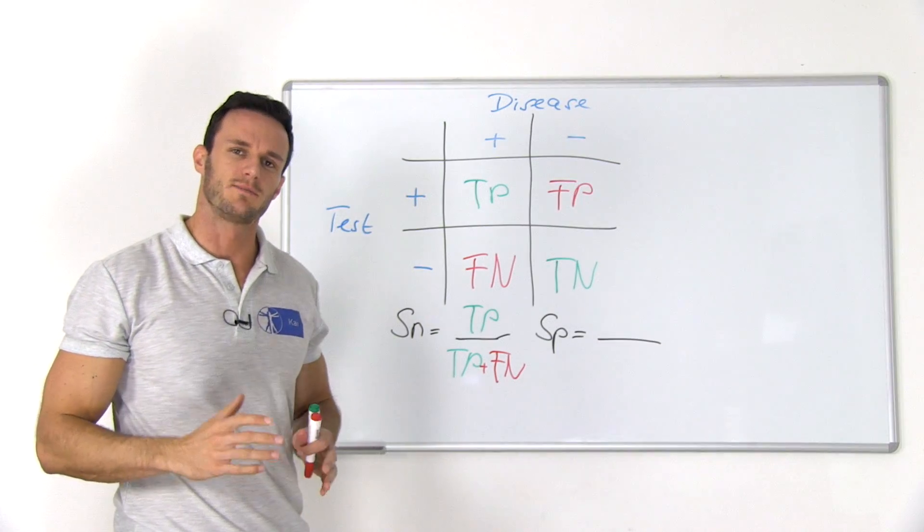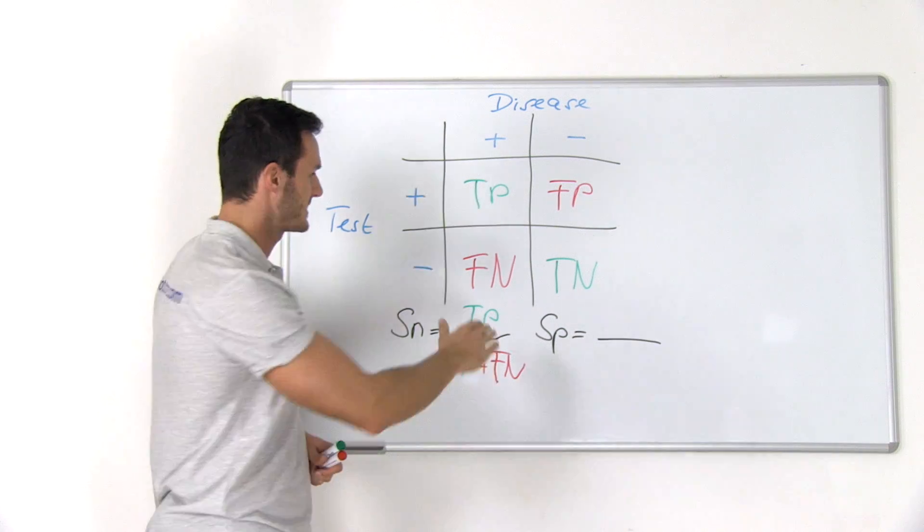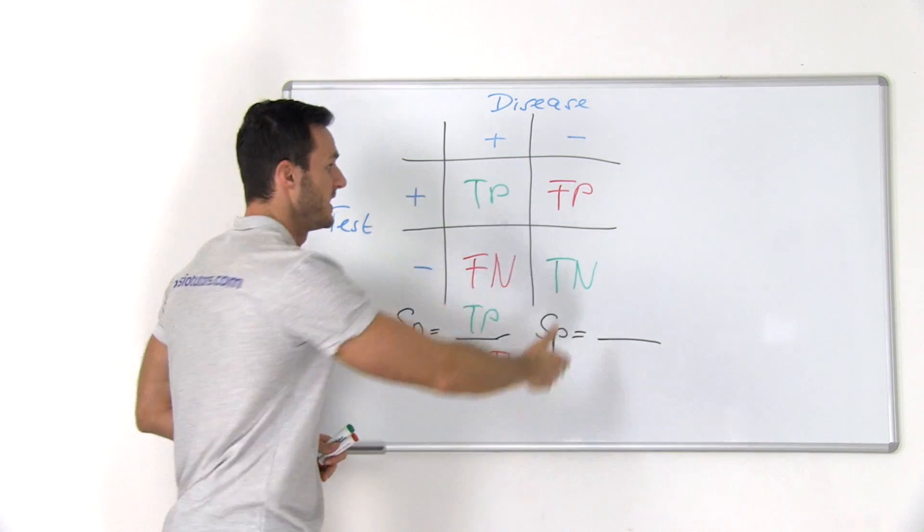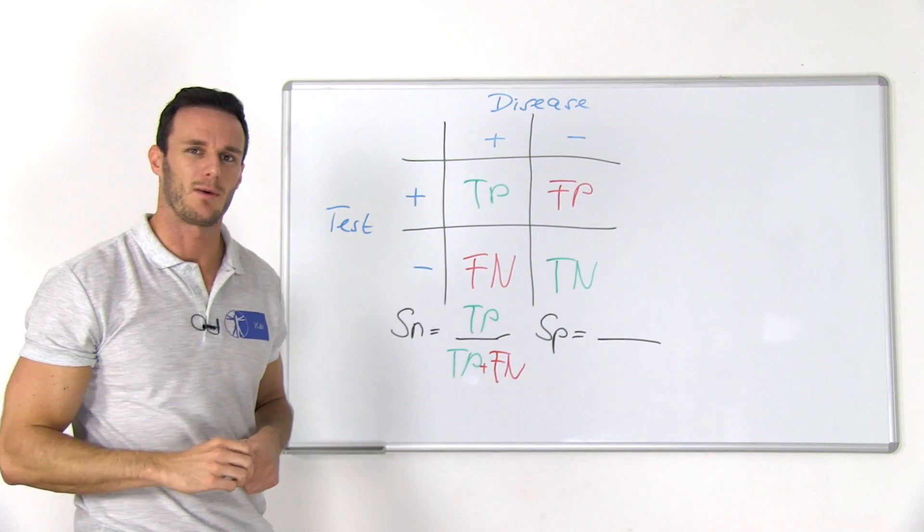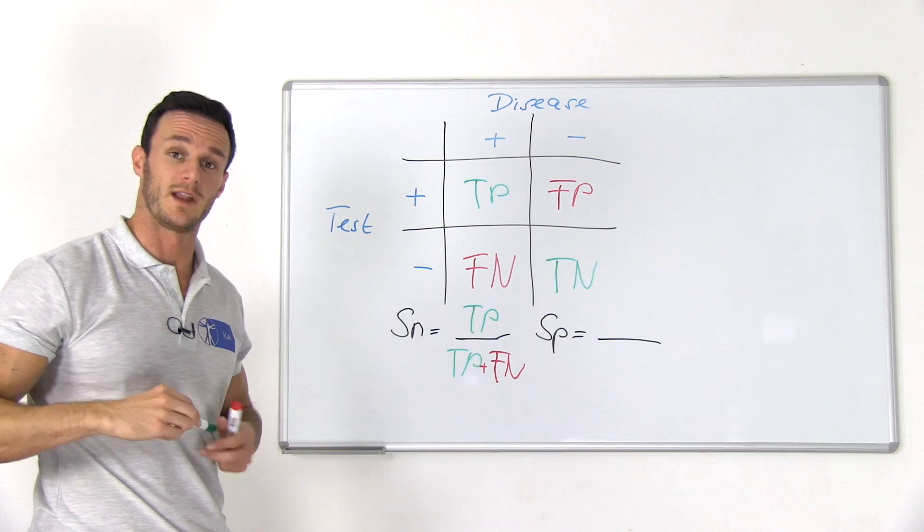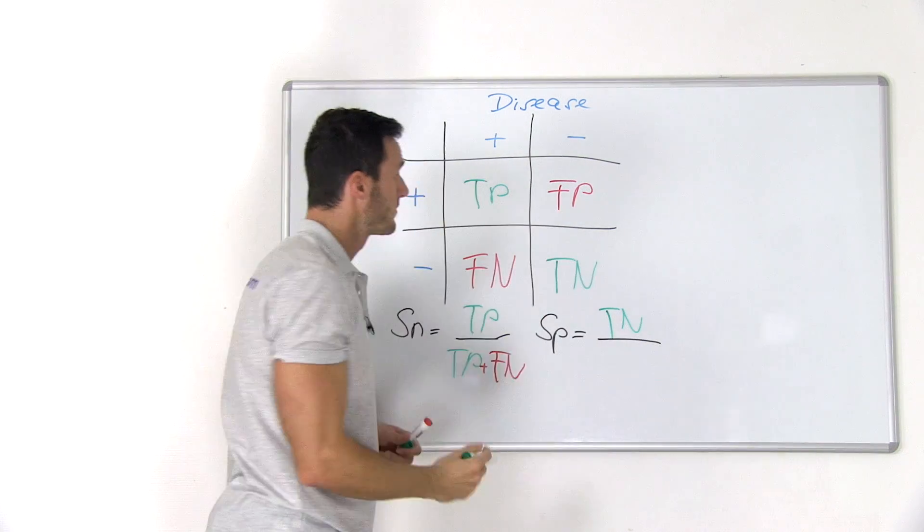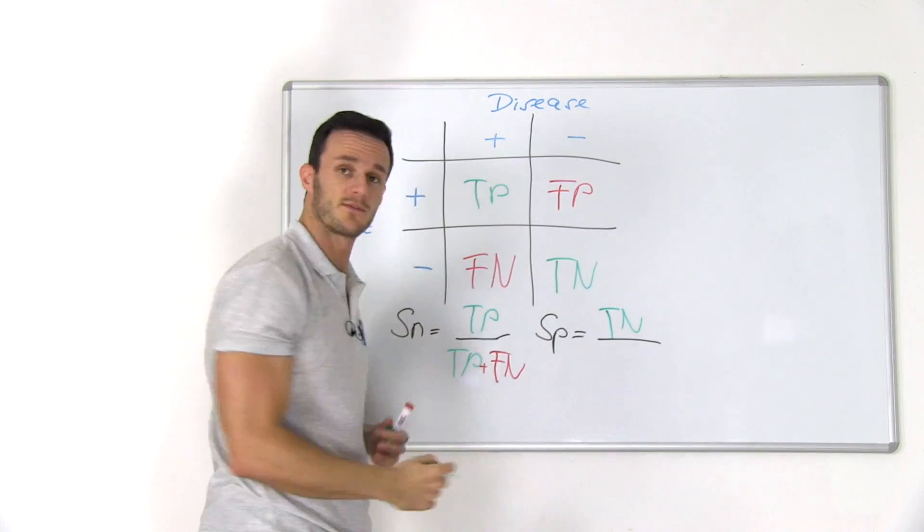On the other hand, specificity is the proportion of all patients with a negative index test amongst the patients who do not have the disease. So the right column right here. So in order to calculate specificity, we have to divide all true negatives through all the patients who do not have the disease. So all true negatives plus the false positives.